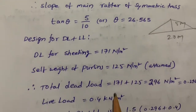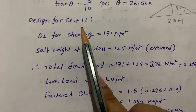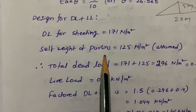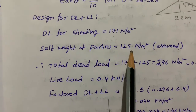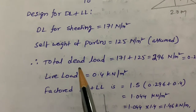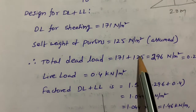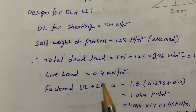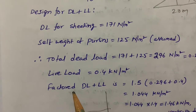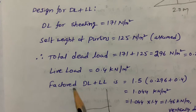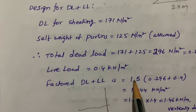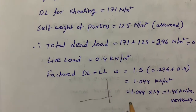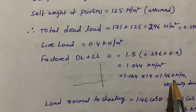After that we need to design for dead load plus live load. Dead load of sheeting is given, and self weight of purlin we assume as 125 N/m². Total dead load is found by adding both values: 96 N/m². Live load is also given. The factored load uses a partial safety factor of 1.5 for steel, giving us 1.46 kN/m.